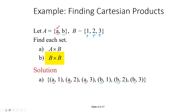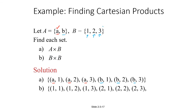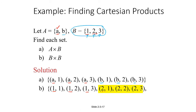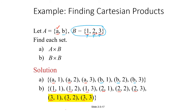Now let's find B cross B. For B cross B, we're only working with set B — it provides both the first and second coordinates. Starting with 1 as the first coordinate, we can have (1, 1), (1, 2), or (1, 3). Then with 2 as the first coordinate: (2, 1), (2, 2), and (2, 3). And we're not done — we could also have 3 as the first coordinate: (3, 1), (3, 2), and (3, 3).